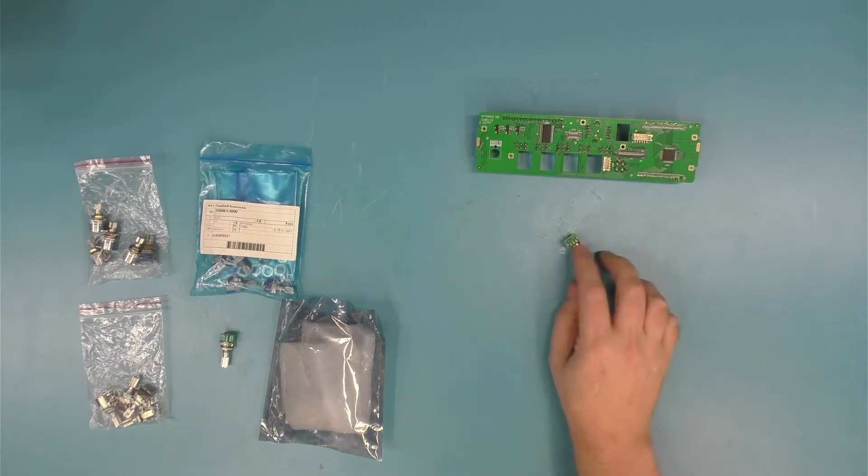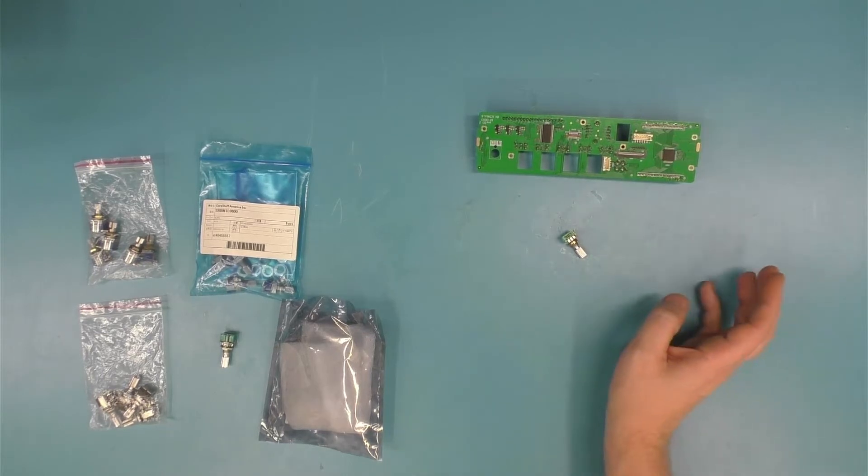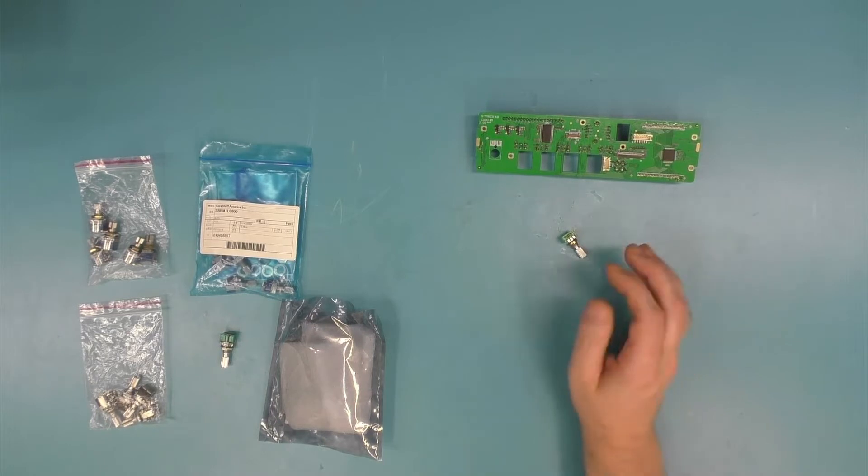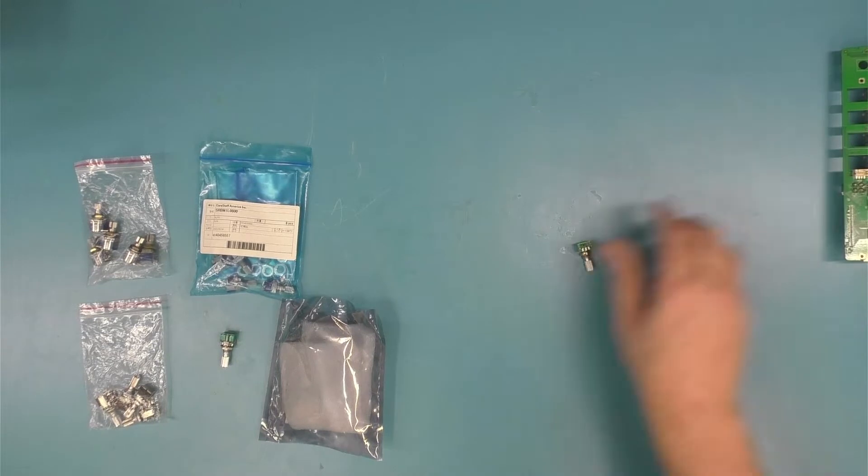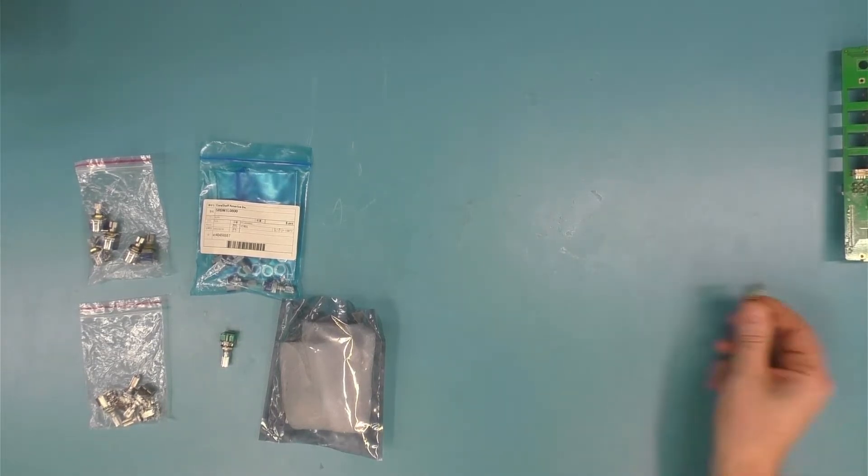right now, if you need an encoder for a version 2 radio, the only source is Stryker. You got to go to Stryker. They've got them. You talk to them, you can get these from Stryker.